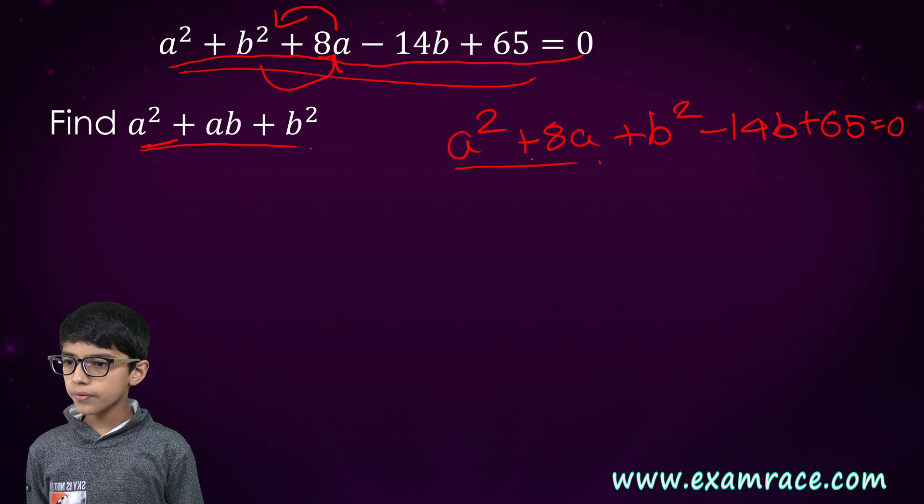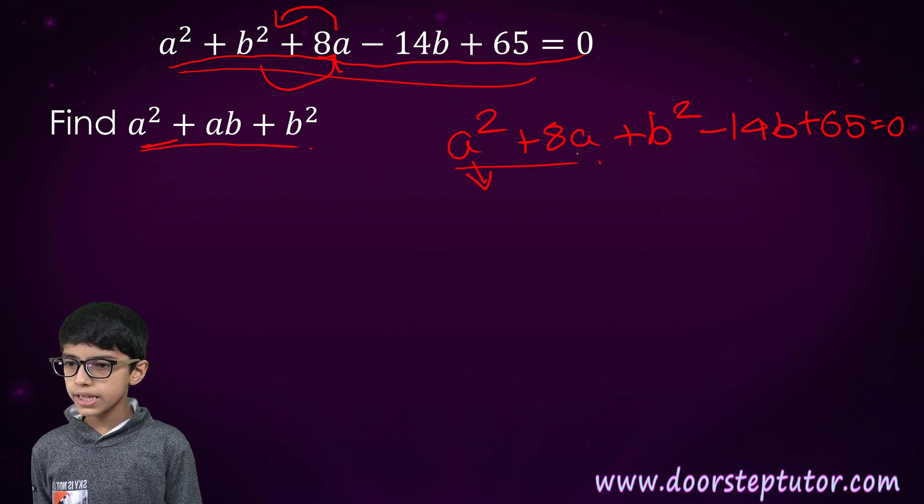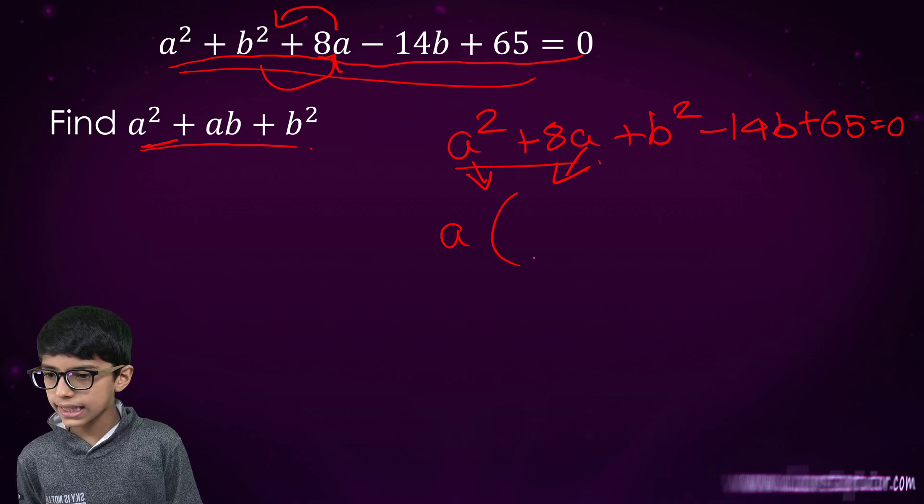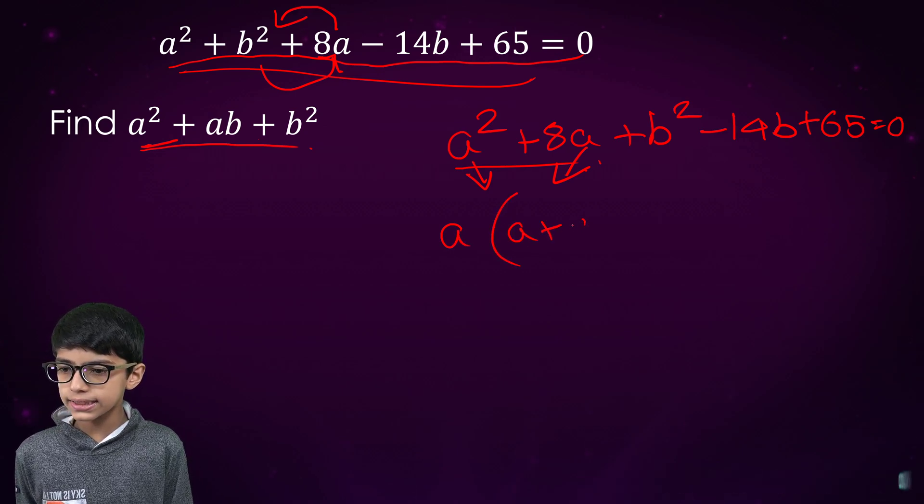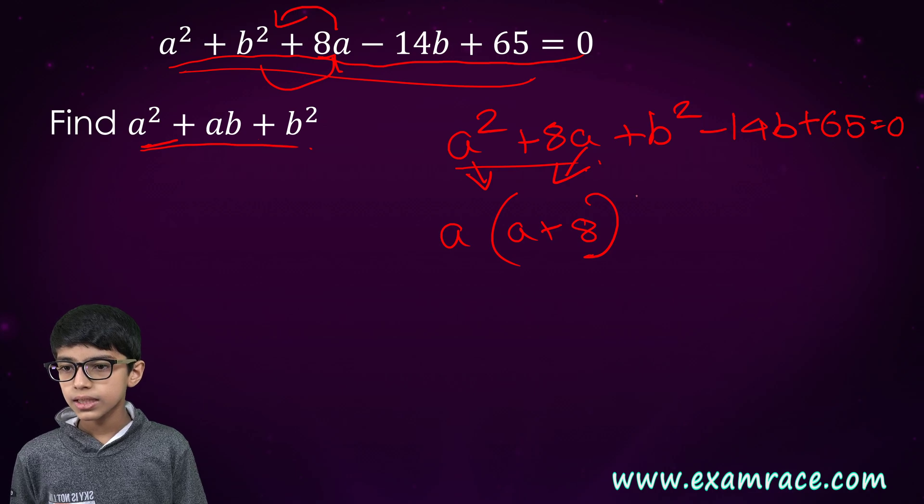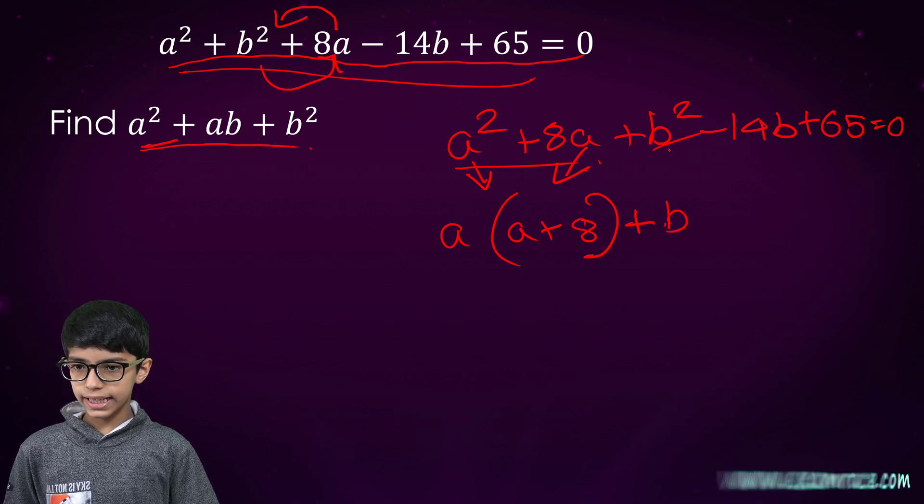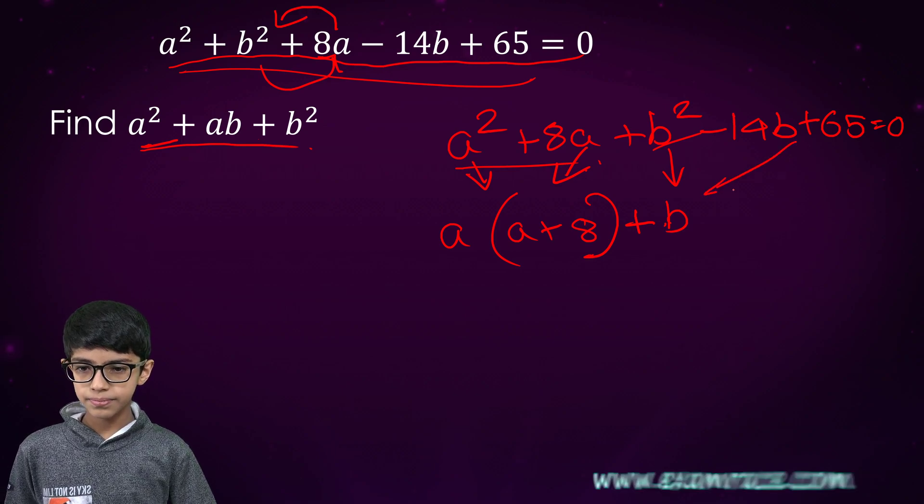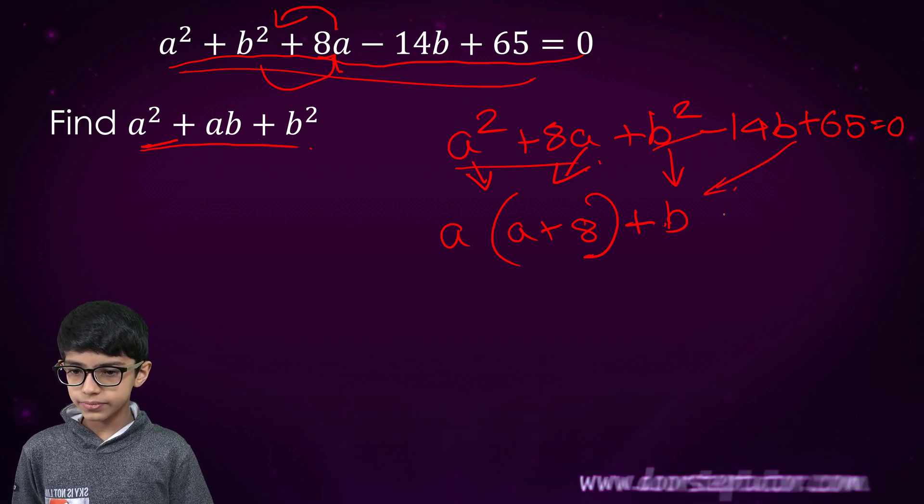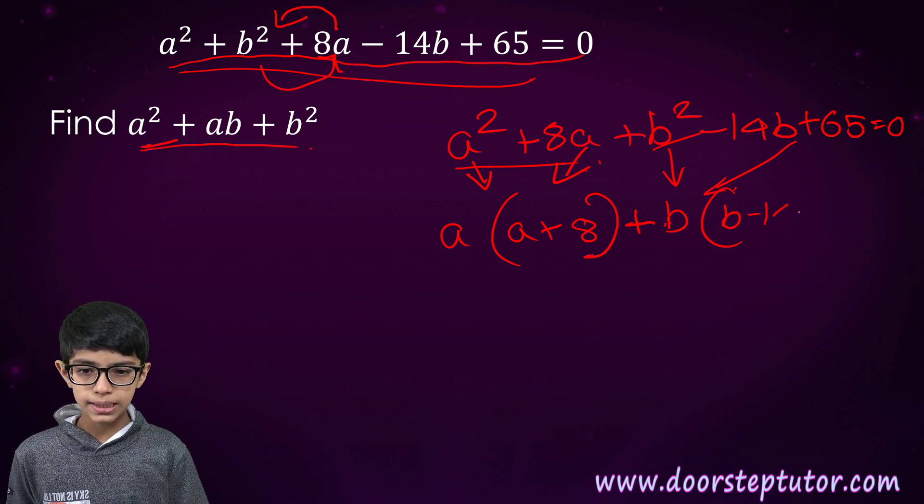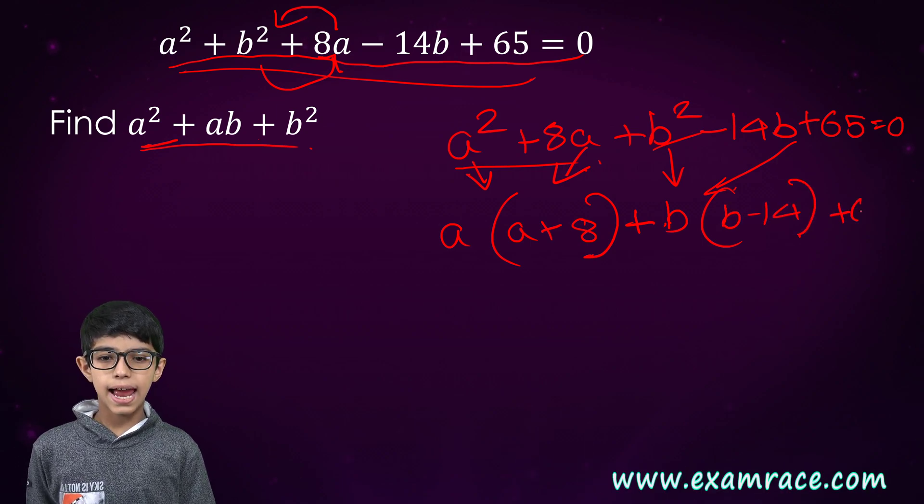Now, we will take 1a from here and 1a from here. We will take a common and a + 8. Then we will add. We will take b common and subtract 14 from b. Then we will add 65.